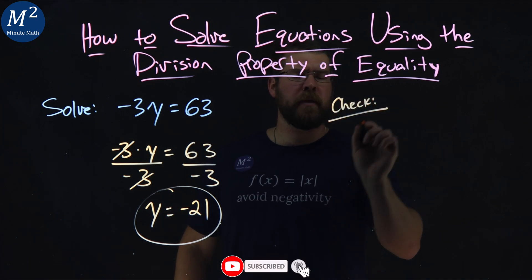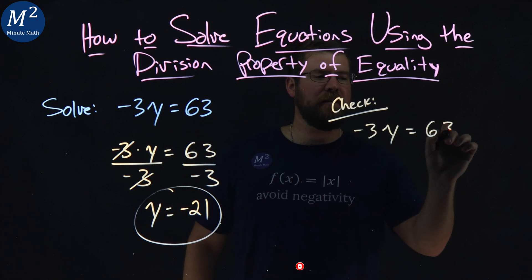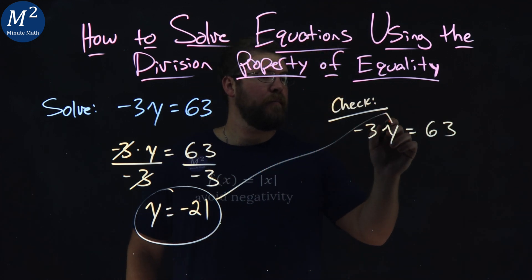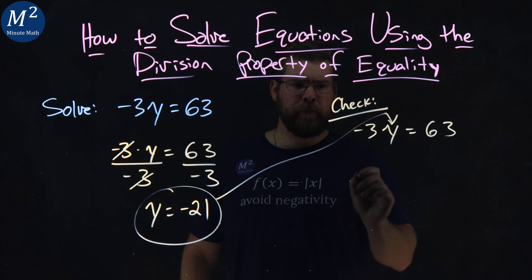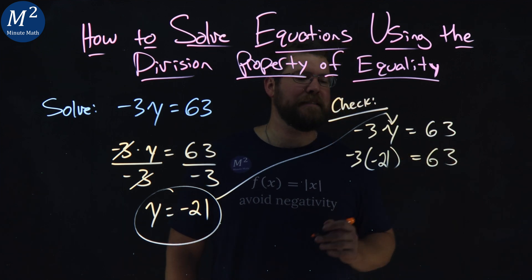How do we check it? Rewrite our equation, negative 3y equals 63. Take this negative 21 and plug it in for y. Negative 3, negative 21 for the y, they're being multiplied, equals 63.